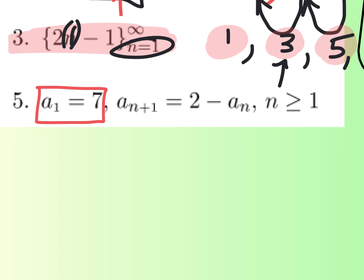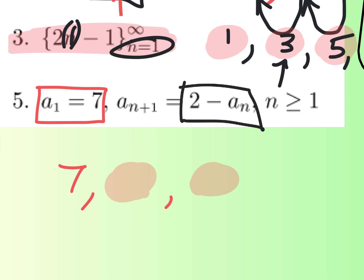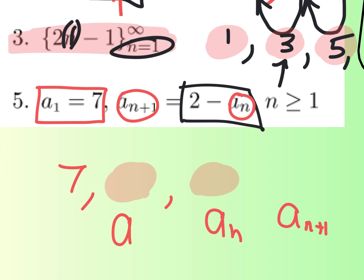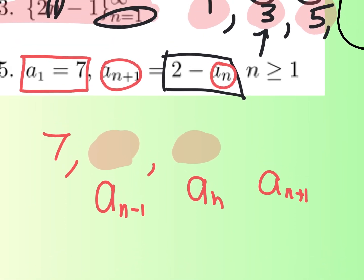What I want you to figure out is what are the next two terms. See if you can understand a formula like this. It says 2 minus a sub n. Well, what's a sub n? You've got to compare it with a sub n plus 1. Let's label a sub n as 'that's a term' — the one after it would be a sub n plus 1, and the one in front would be a sub n minus 1. You guys did learn this last year — it's called recursive.